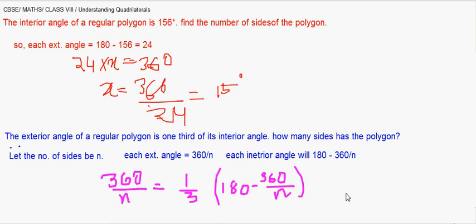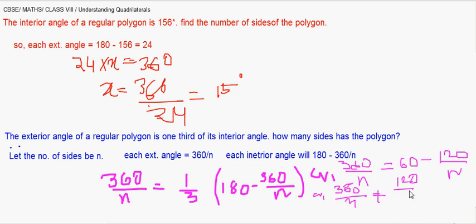So exterior angle is 360 by n and this is one third of the interior angle. Let us try to solve this one. So this becomes 360 by n and this is 60 minus 120.